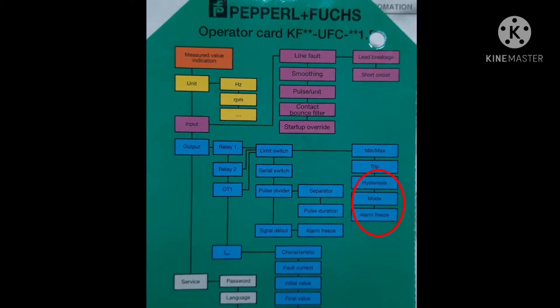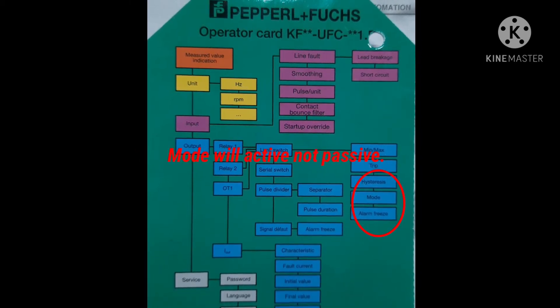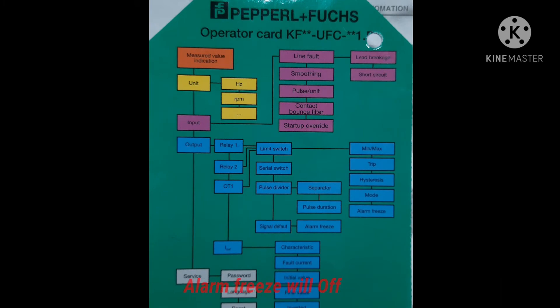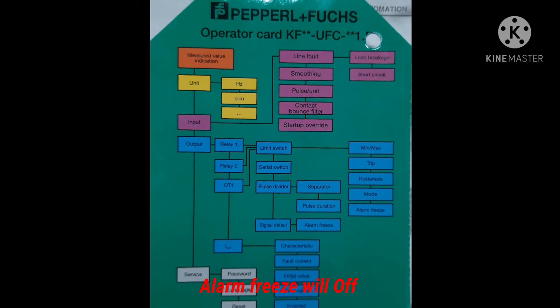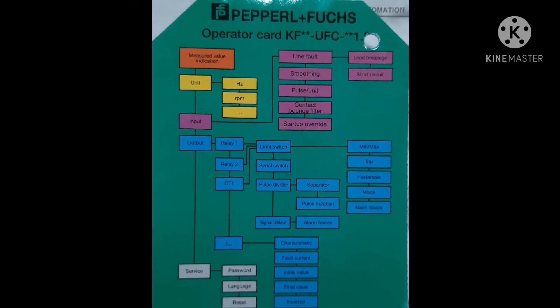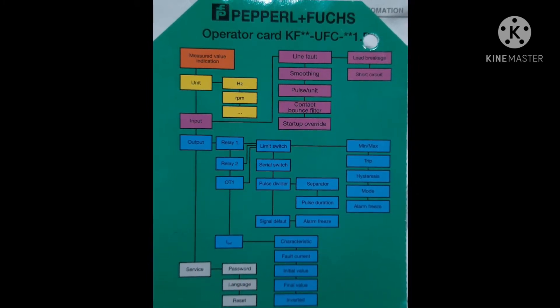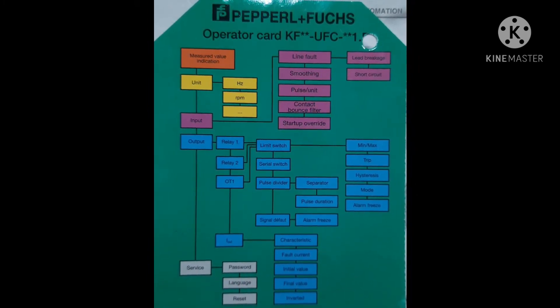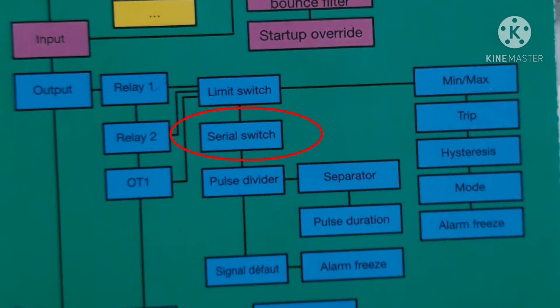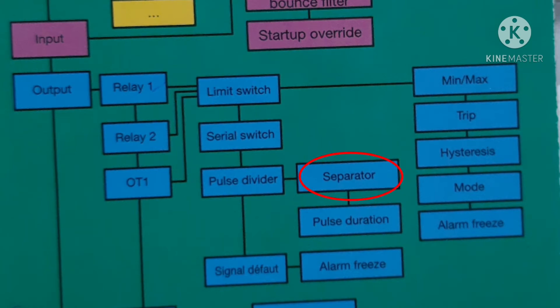Press OK, mode will activate — press OK again, and alarm freeze will be off. Return back using the escape key until 'limit switch' is shown, then press down for 'serial switch on', again press down for 'pulse divider on — pass 0', press OK for 'separator', and again OK for 'pulse duration'.